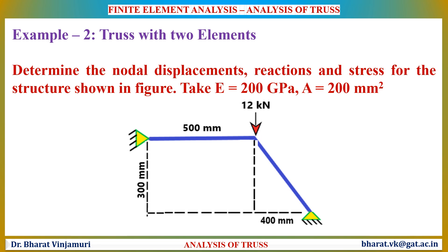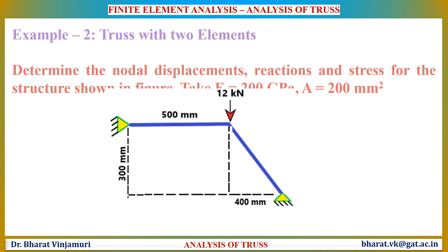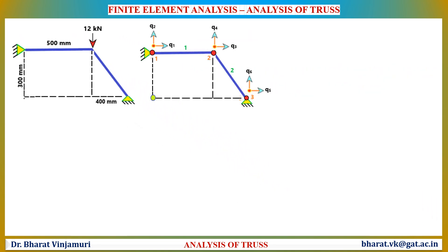With the basics from the previous example, let us now quickly solve the remaining examples. In this example, the Young's modulus and area of each element have been given, as well as the dimensions. There is a load of 12 kN applied in the downward direction. The first step, as usual, is to convert the geometric model into the FE model. This model also has two elements and three nodes.